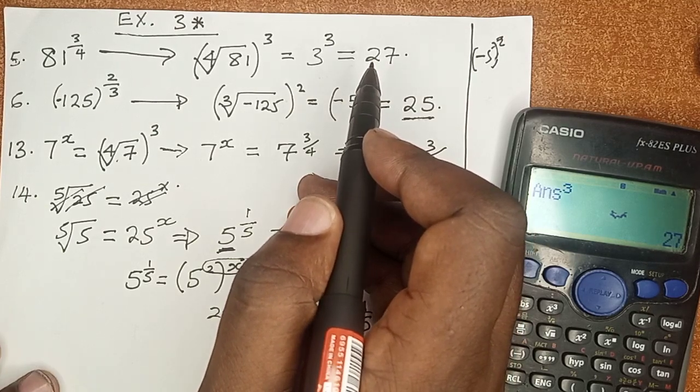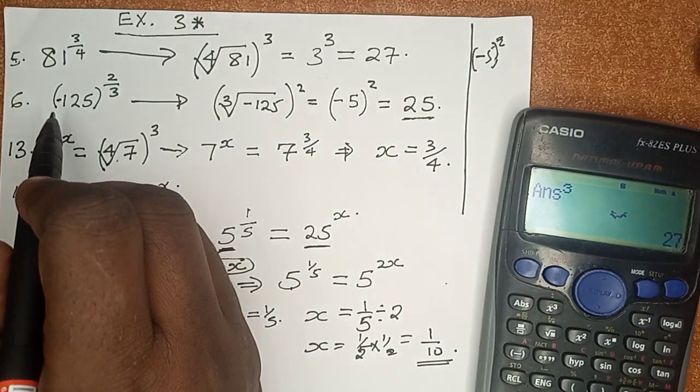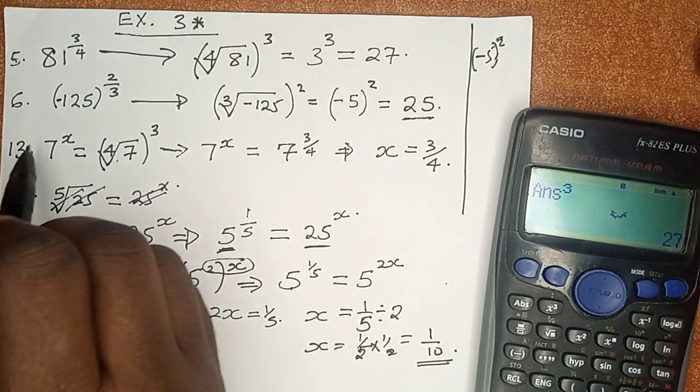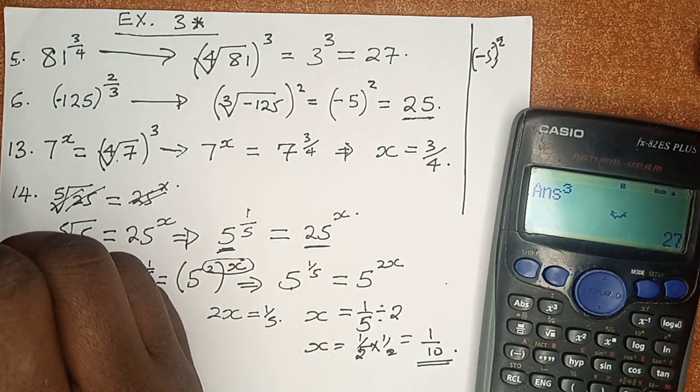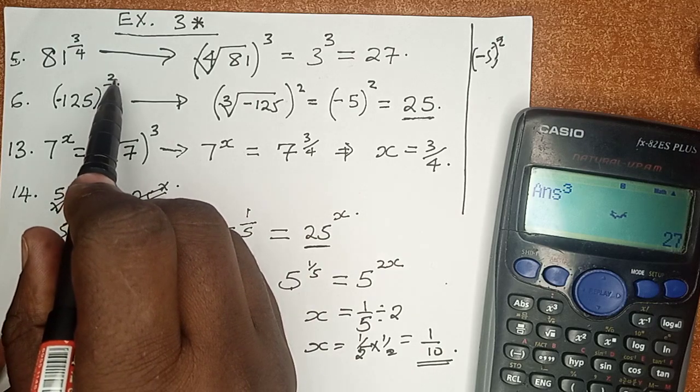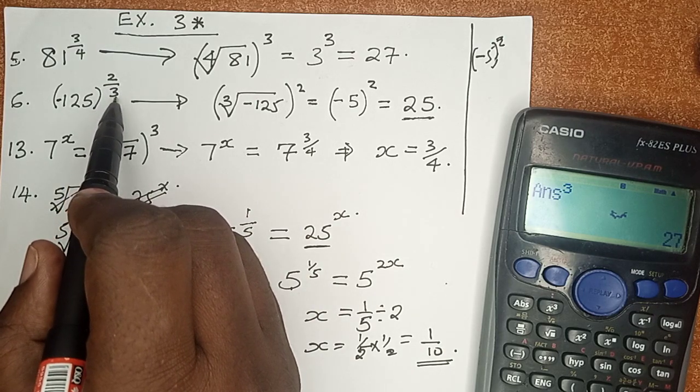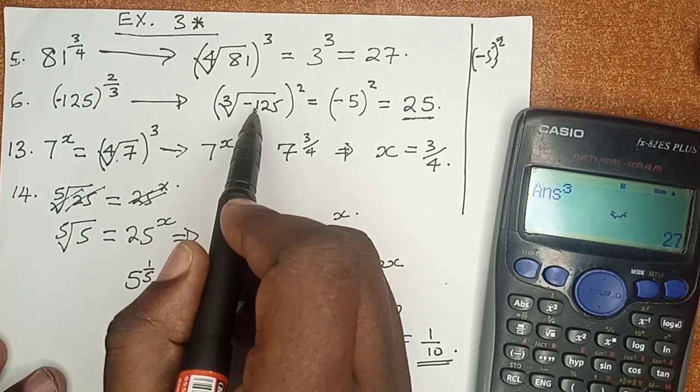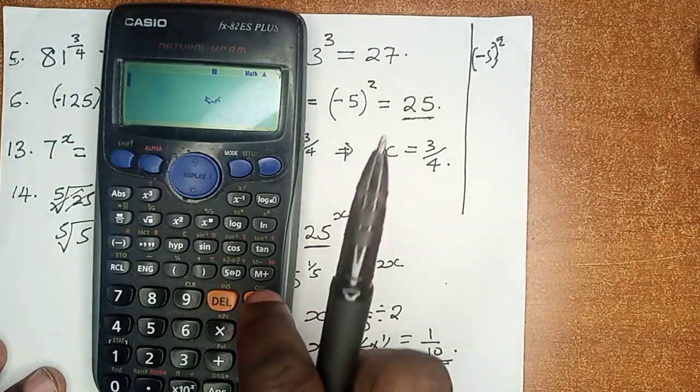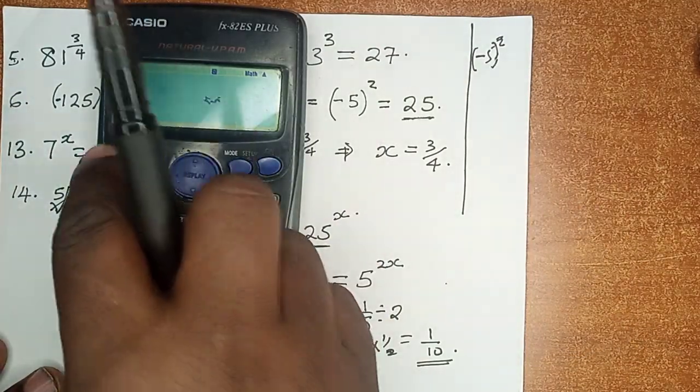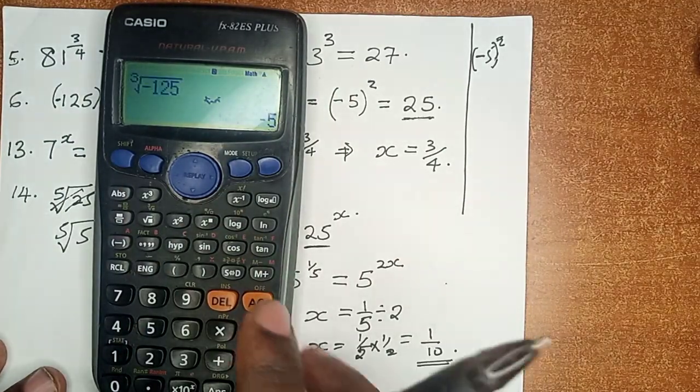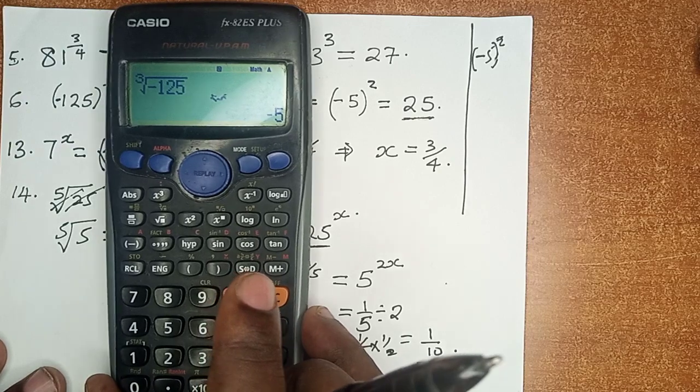What about number 6? Number 6, we have negative 125 raised to power 2 over 3. We have to be very careful here because 125 itself is negative. And we have 2 over 3 as the index. So we have to go for the cube root of negative 125. Let us see what happens there.